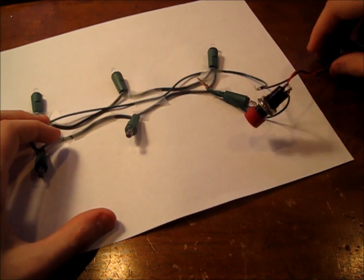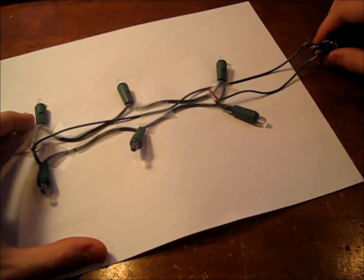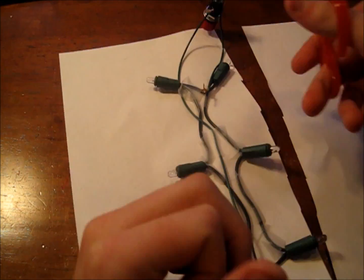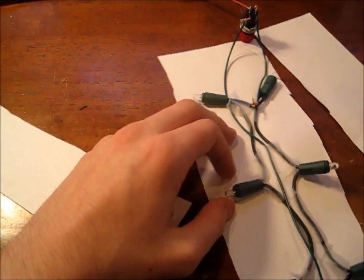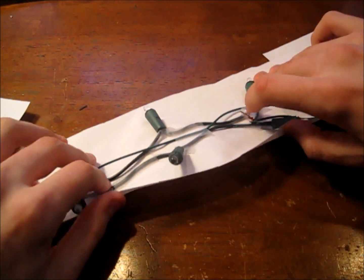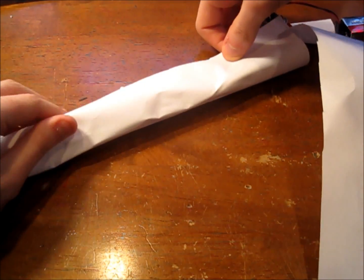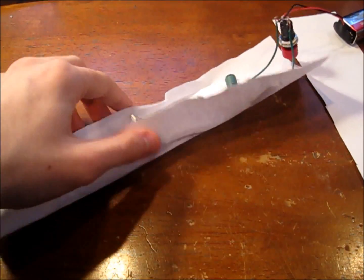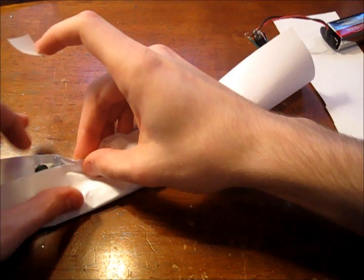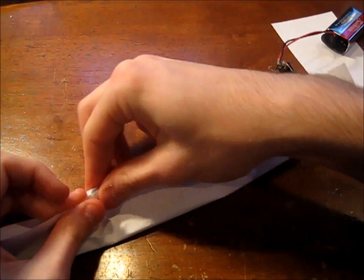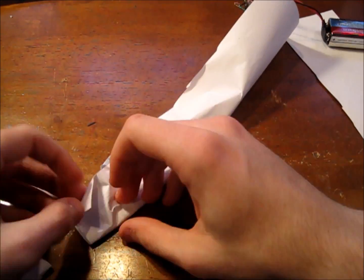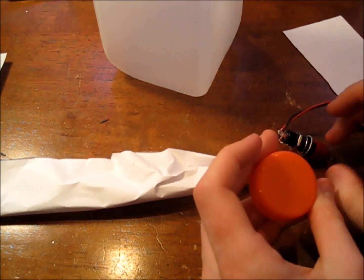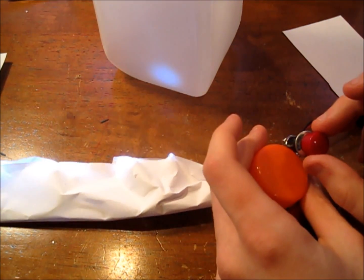So we're going to start by taking our paper and just trimming it down. Okay, you can now fold everything over and then tape it shut. So now I'm going to take the cap and cut out a little hole for the button to come through.